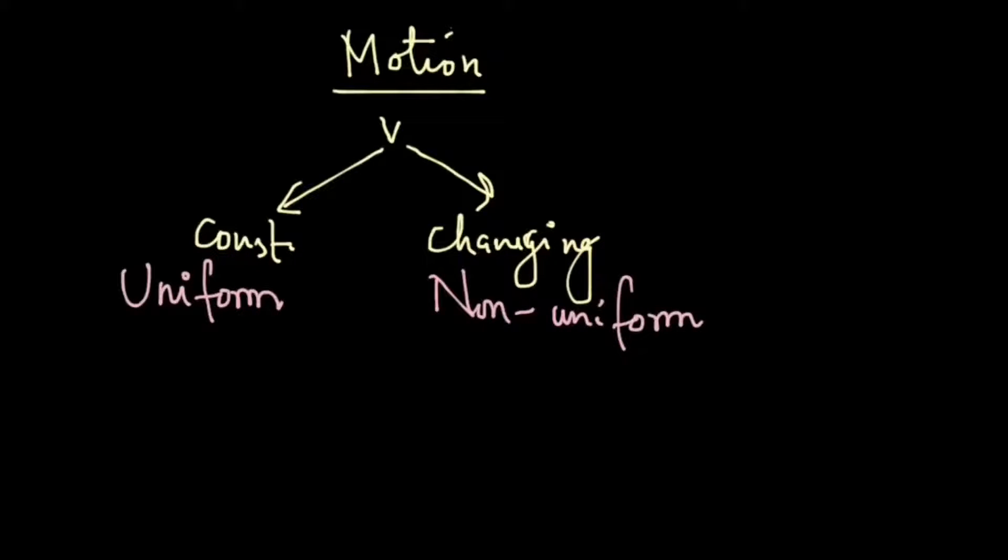For uniform motion, since the velocity is constant, the change in velocity will be equal to zero and that means the acceleration of the particle will be zero in uniform motion.